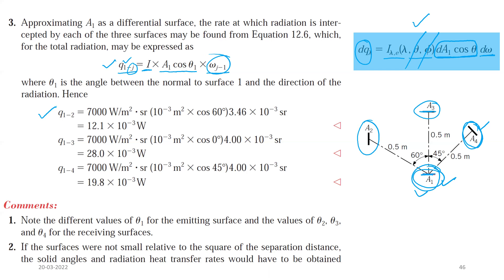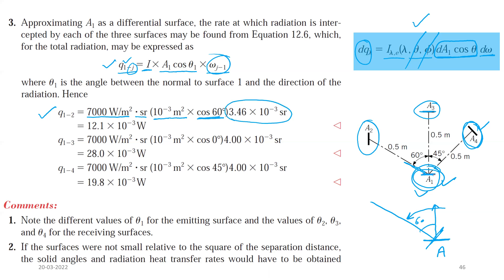For q(1→2): the direction to a2 makes 60° with a1's normal. So q(1→2) = 7000 W/m²·sr × 10⁻³ m² × cos60° × 3.46 × 10⁻³ sr = 12.1 × 10⁻³ W.